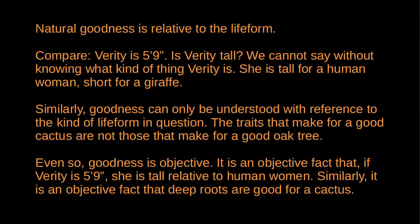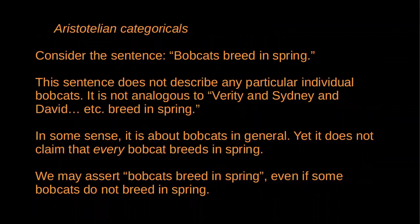To defend this kind of view, Foot draws on the work of Michael Thompson, in particular his paper 'The Representation of Life.' Thompson argues that descriptions of organisms often involve normative claims that are based on the nature of the species to which the organism belongs. In particular, sentences of the form 'S's are F' or 'S's do V' - for instance, 'bobcats are carnivores' or 'bobcats breed in spring.' Let's consider this sentence: bobcats breed in spring. How should this be interpreted?